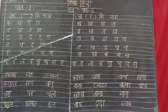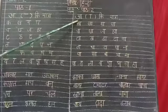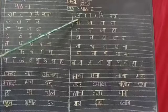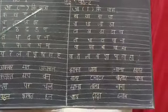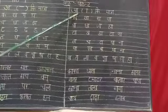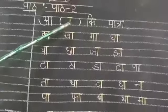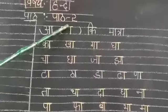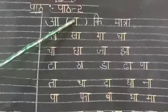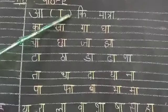Today I am going to teach you the second letter of swar - Aa (आ). Aa-ki maatra has a standing leg and shiru rekha. That is the symbol T. Aa-ki maatra is T.